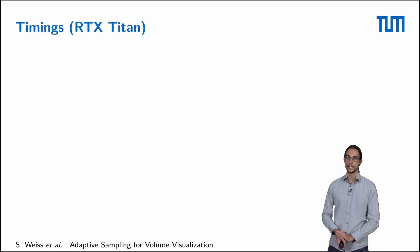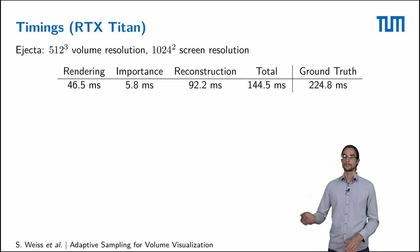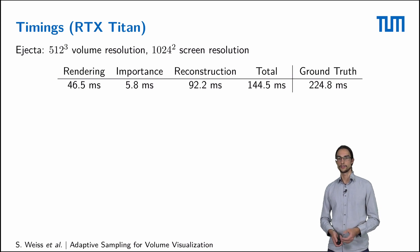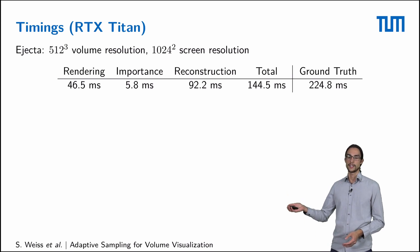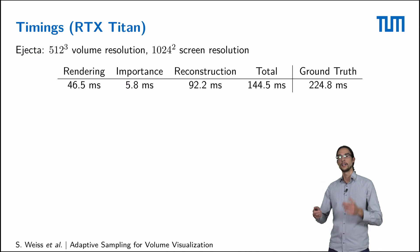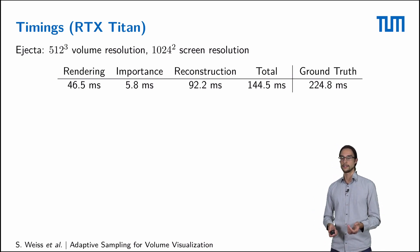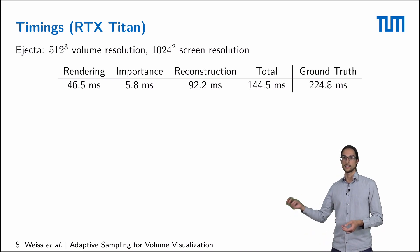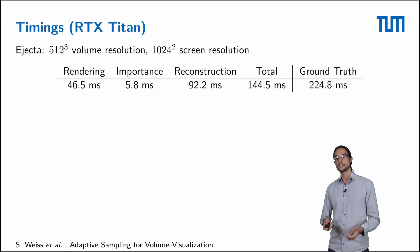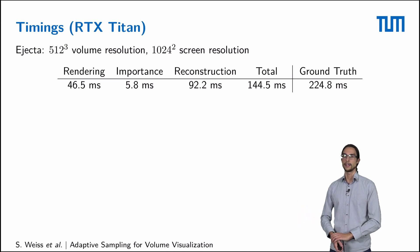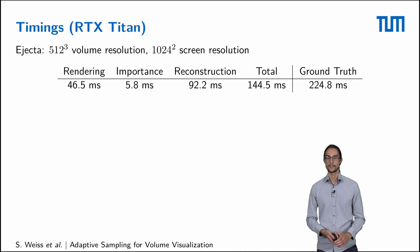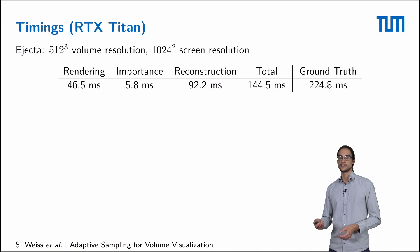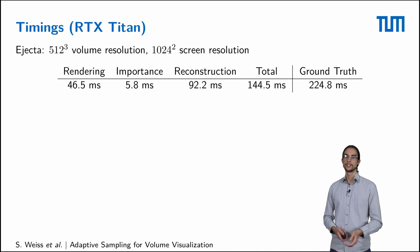So far I haven't spoken about timings. For the ejector dataset with a volume resolution of 512 cubed and a screen resolution of 1024 squared, the individual steps take the following time: rendering takes 46 milliseconds — this includes the low-resolution rendering and the sparse sampling. The first network that estimates the importance map takes around 6 milliseconds. The second network for reconstruction plus the inpainting step takes around 92 milliseconds. In total, this gives a runtime of 144 milliseconds, which is already faster than a ground truth rendering of 324 milliseconds.